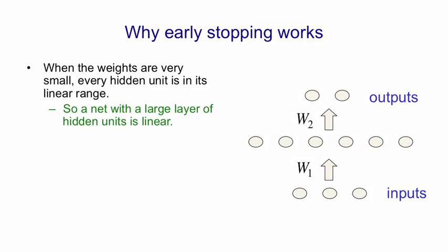What that means is when the weights are small the whole network is the same as a linear network that maps the inputs straight to the outputs. So if you multiply that weight matrix W1 by the weight matrix W2 you'll get a weight matrix that you can use to connect the inputs to the outputs.